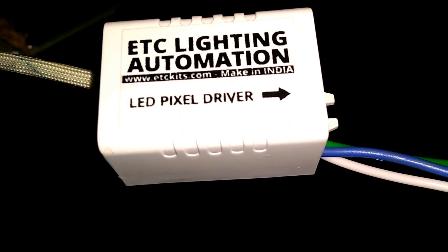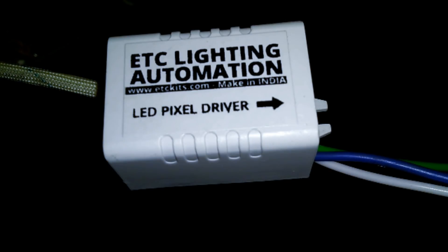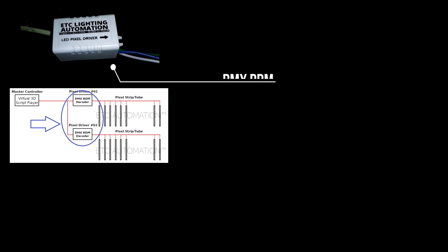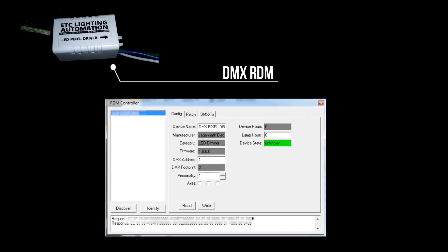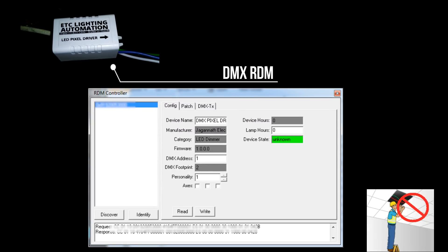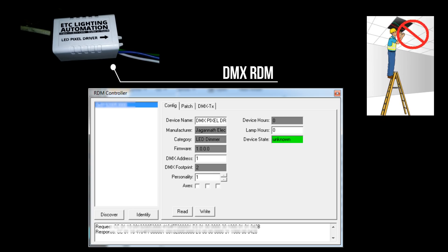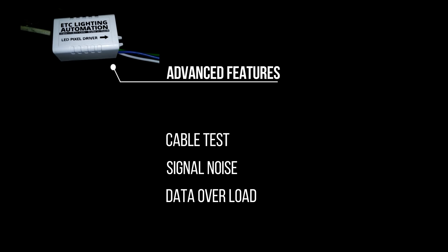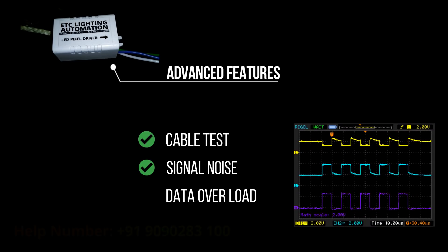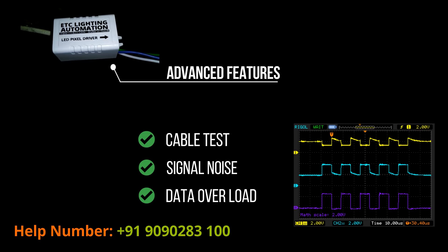Let's go behind the scenes. This is the DMX pixel driver — it is not just DMX 512, it is a DMX RDM decoder. You can change its address and other settings remotely, so if anything goes wrong you don't need ladders to climb up and change its settings. It has an inbuilt DMX communication error handling feature; it can detect loose or defective cables, signal noise, and data overload.